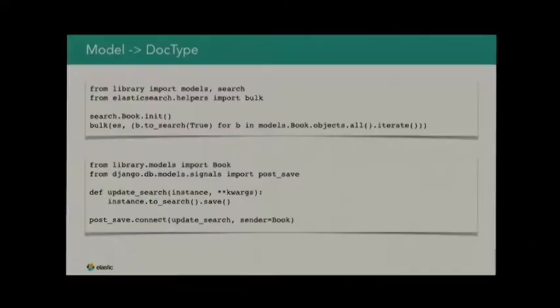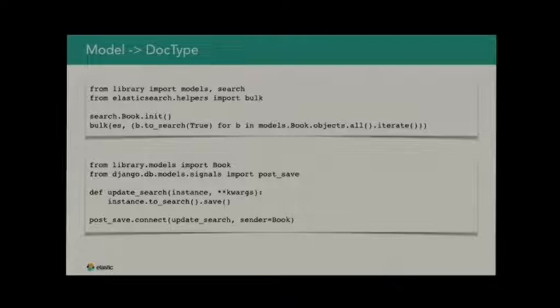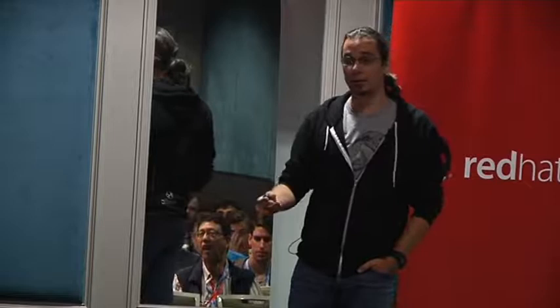You need two ways to actually index data into Elasticsearch. The first is a batch job — a management command is the perfect place, and you literally only need four lines. You see book.init(), which sends the mapping to Elasticsearch and creates it there, and then there's a simple bulk function in the Elasticsearch client that takes an iterator and puts everything into Elasticsearch. You need this batch job because you might need to re-index your data. Remember that text analysis happens at index time, so if you change anything about your text analysis — an analyzer that doesn't work as expected, or you realized too late you needed to keep the raw version — you need to re-index.